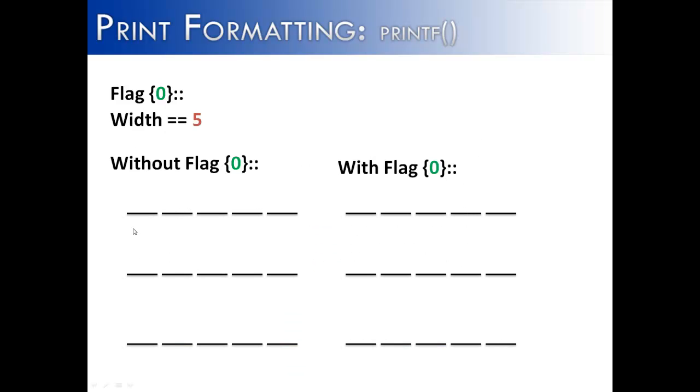What I've done is created a width of 5 and indicated the width by lines in each one of these examples. If the zero flag is not used, it will right justify but not put anything inside of these spaces preceding the number. But when we do use the flag, it will add the leading zeros. And notice for the negative, it adds the negative first and then adds the leading zeros.